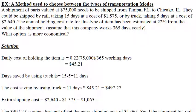To solve this problem, first calculate the daily cost of holding the items. This equals 22% (0.22) of the shipment value of $7,500 divided by 365 working days, resulting in a daily holding cost of $45.21.